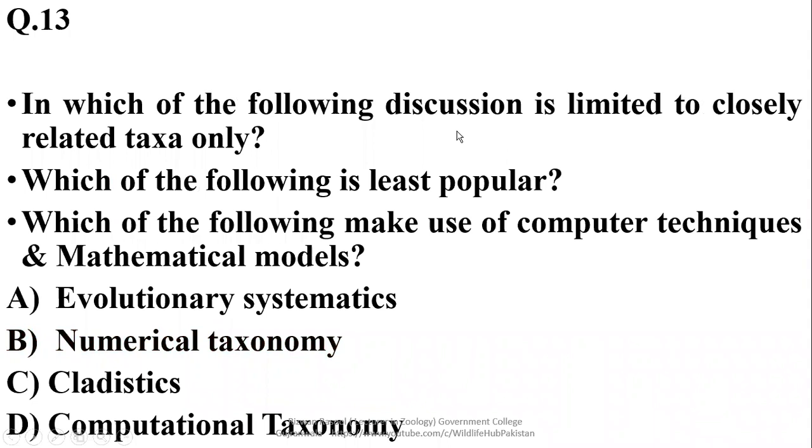In which of the following discussion is limited to closely related taxonomy? That is numerical taxonomy. And which of the following is least popular? That's also numerical taxonomy. And which of the following makes use of computer techniques and mathematical models? That's also numerical taxonomy. All these three features can be asked with reference to numerical taxonomy, so right option over here is Beta for all discussions.